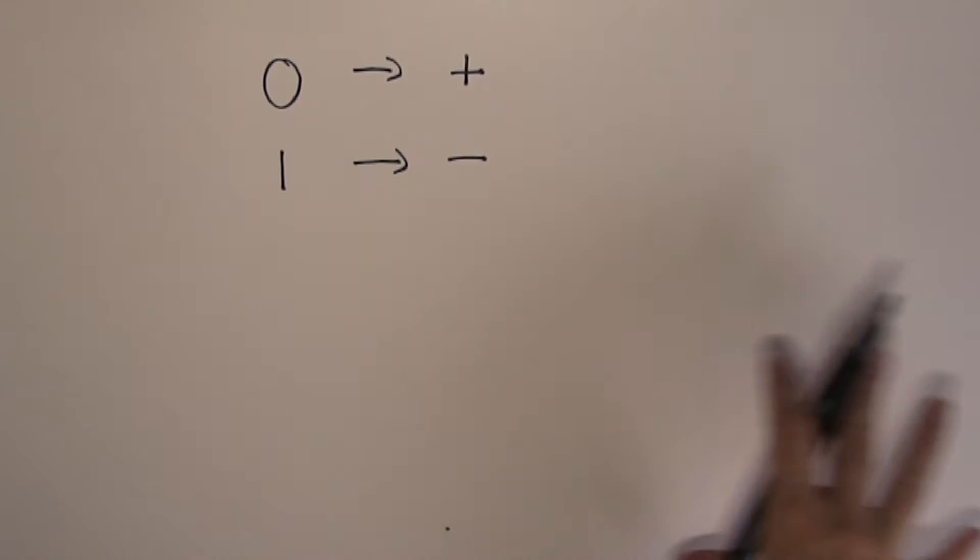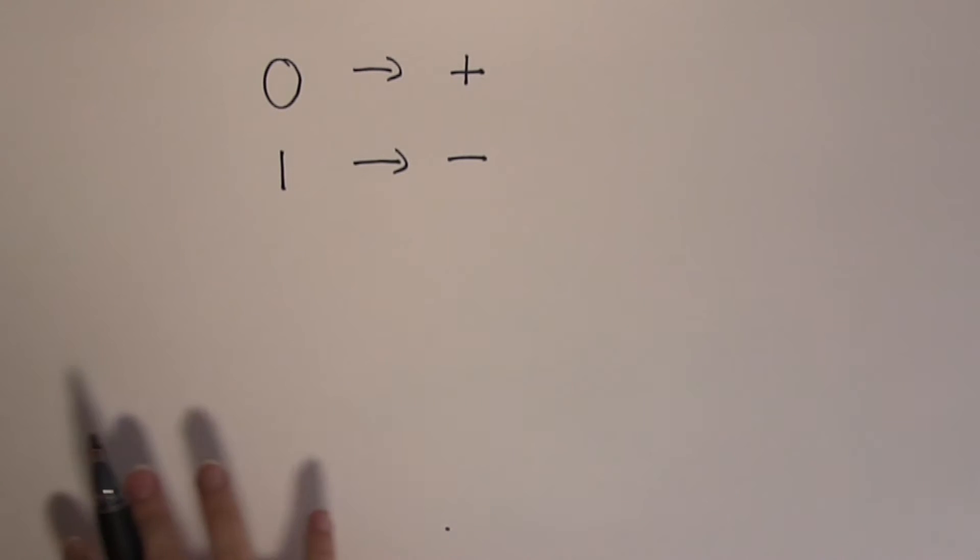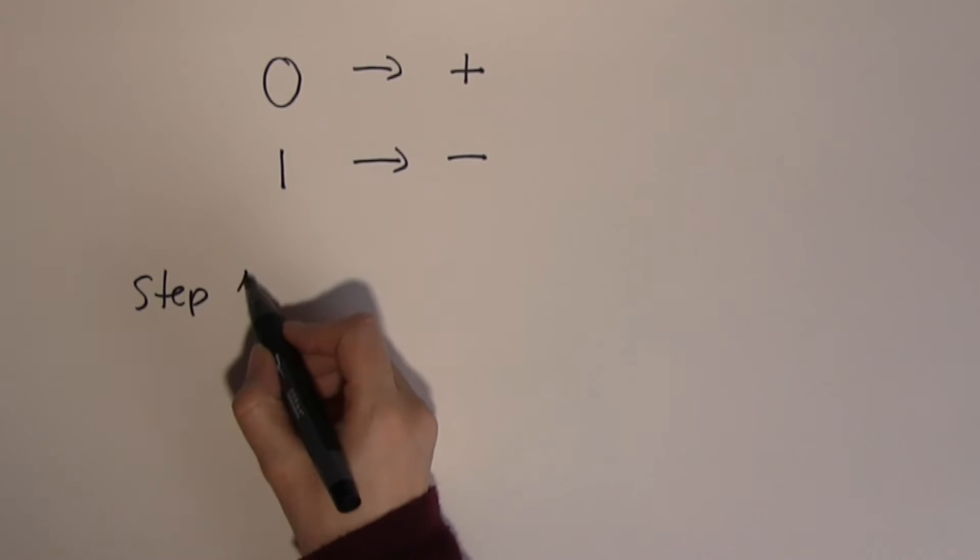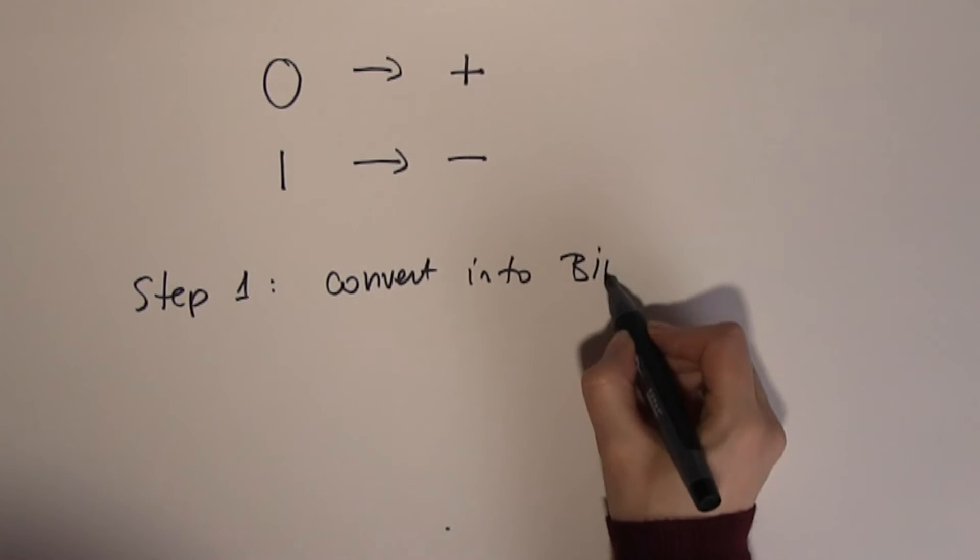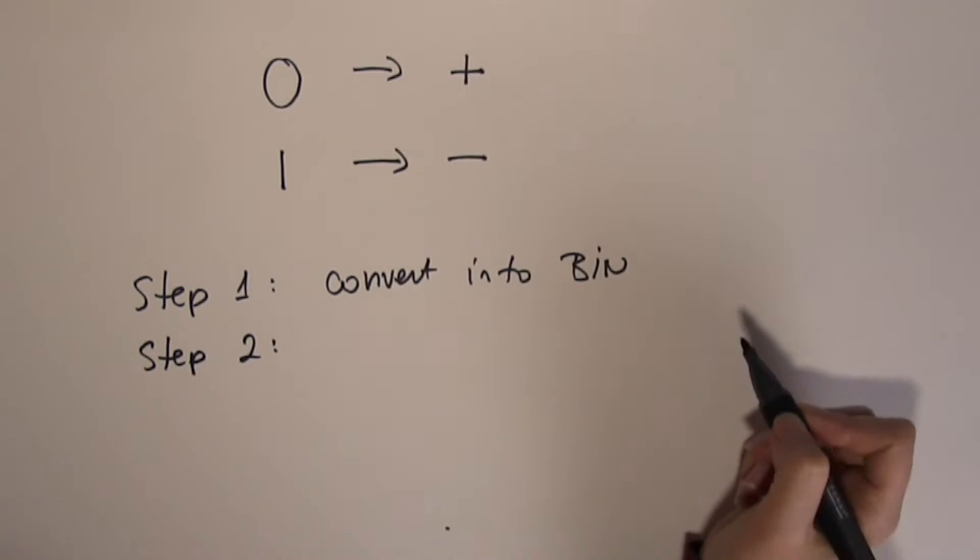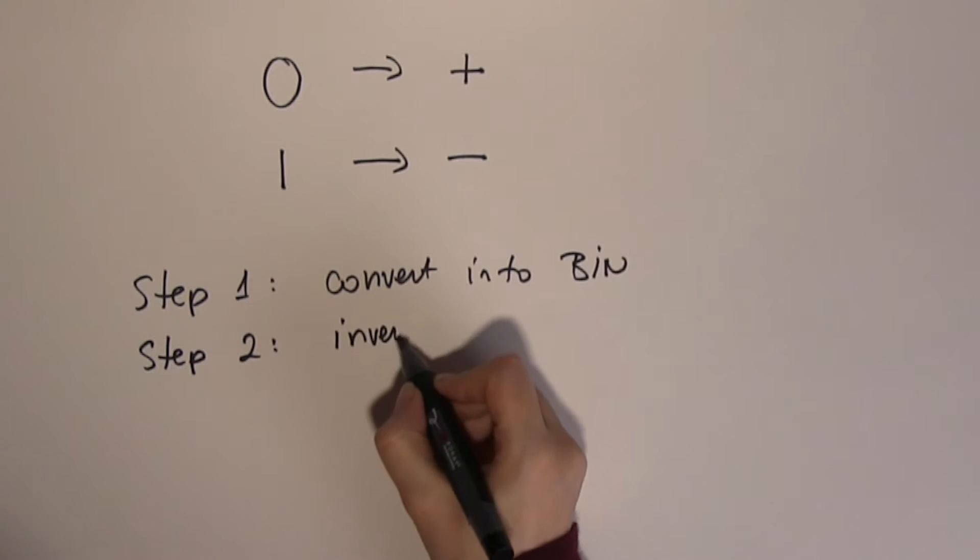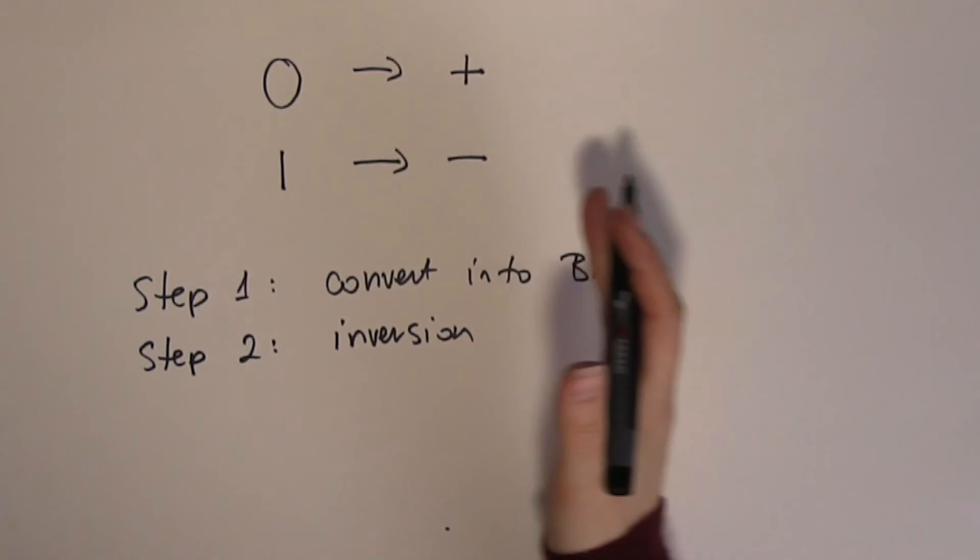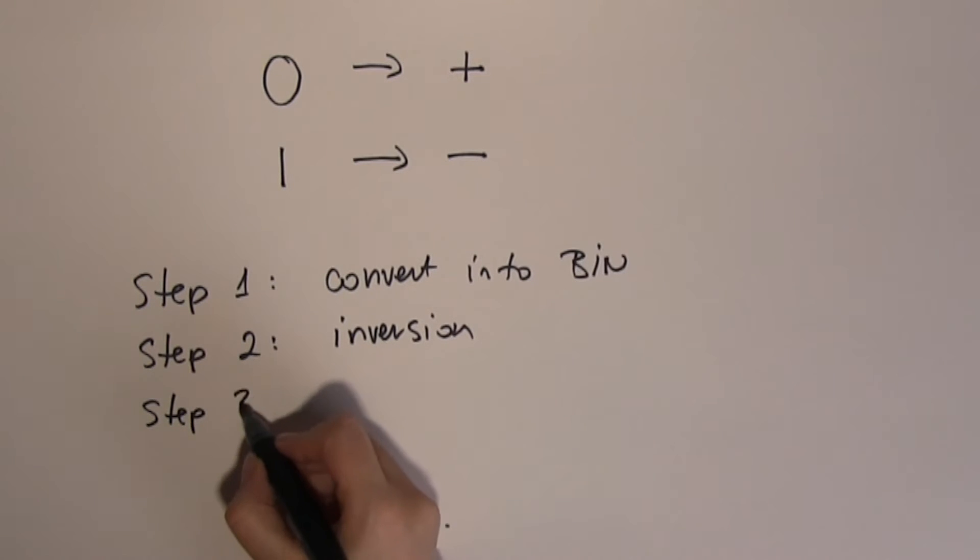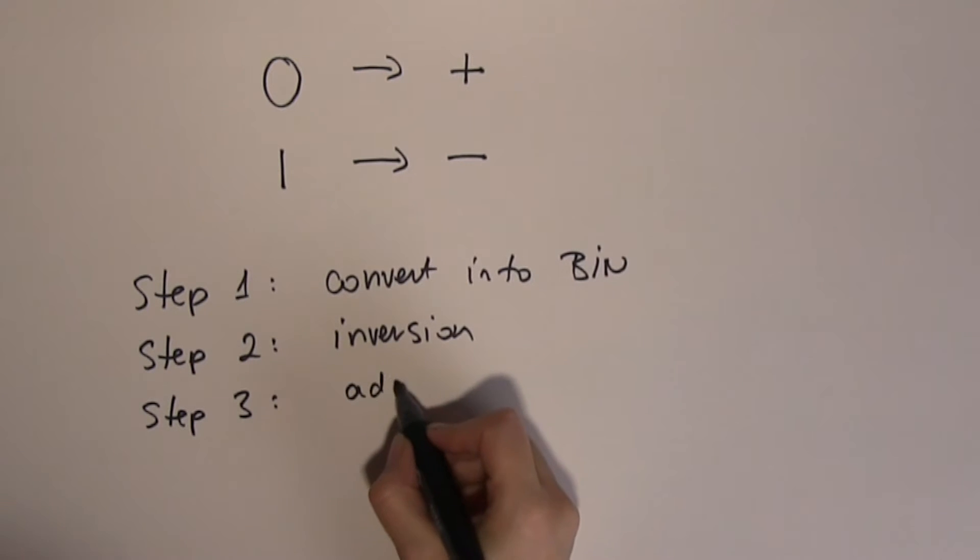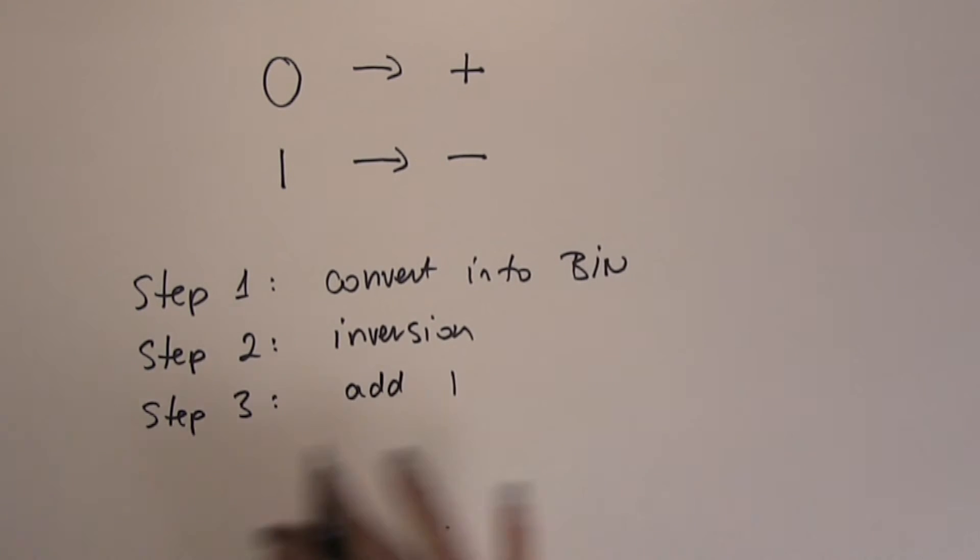This second method is slightly different from the previous one, but the answers will be the same. In the previous method, we converted and then we did a kind of inversion process. In this method, we're also using something similar. Step 1 will be to convert into binary, but then step 2 would be just a simple inversion. We don't have to do anything like copying bits, we just invert all of the digits. But then comes a next step, and that is add 1. I'm going to show you why this is working and how we can do this. Let's look at an exact example.